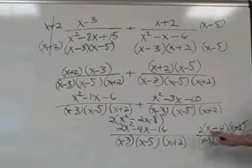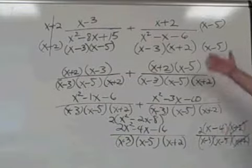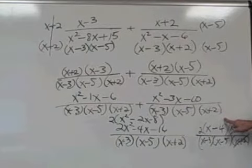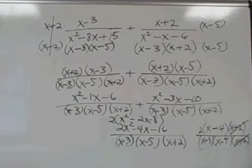And we are left with 2 times the binomial x minus 4 over x minus 3 times x minus 5. This is our answer to the addition of those two fractions. It is not necessary to multiply through by the 2 if you want, and it's not necessary to multiply the binomials to form a trinomial. You can if you want, but it's not necessary.